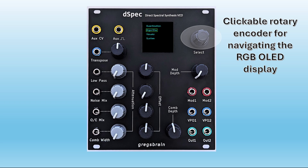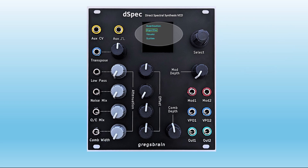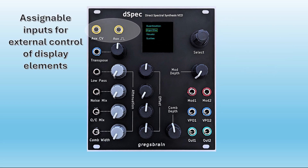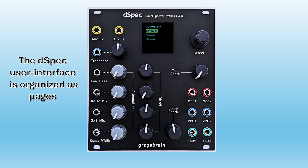All interaction with the OLED display is via the clickable rotary encoder. There are two inputs that can be assigned dynamically to control parameters in the user interface. The CV input can be assigned to sliders, and the pulse input toggles parameters on and off.